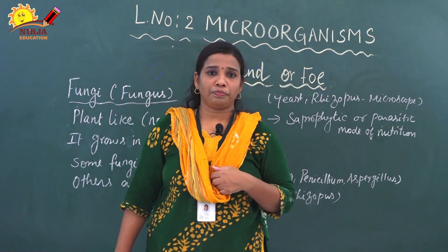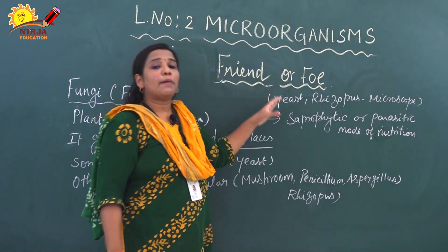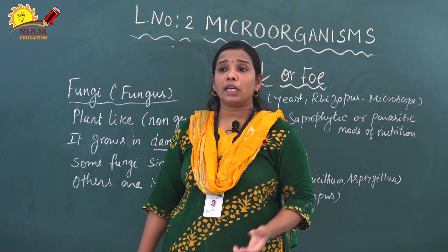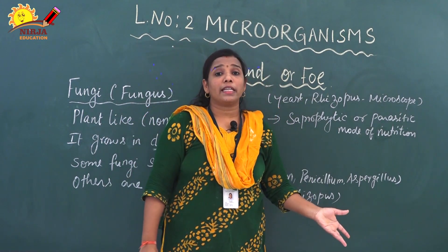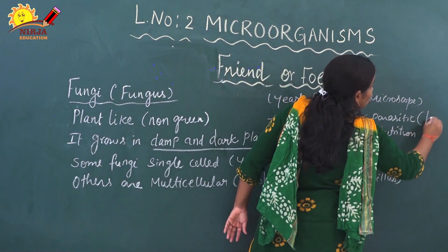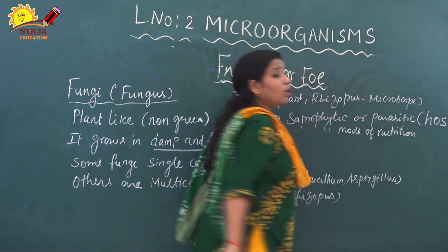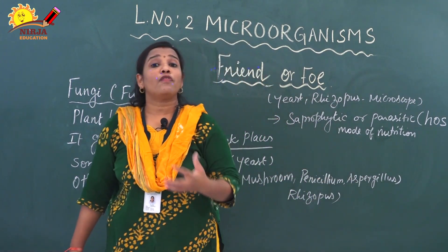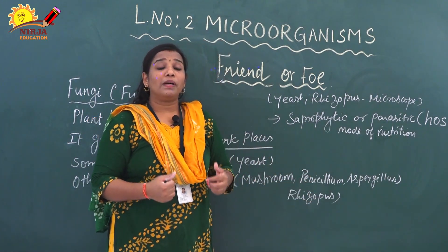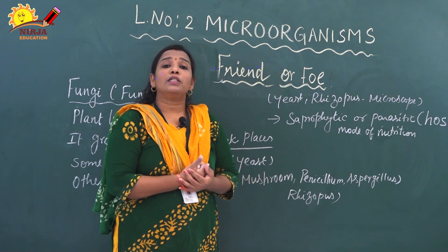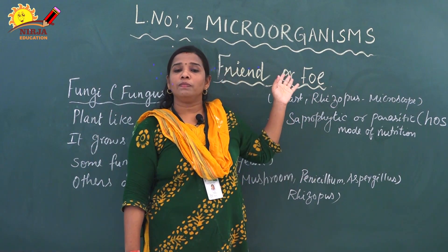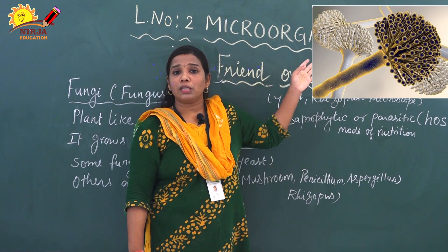Examples of saprophytes are mushroom and mold. The second type is parasitic mode of nutrition, where the fungi take food from other living organisms called the host. Instead of giving benefit, they give a harmful effect to that living organism. Examples are penicillin and aspergillus. You can look at the image — you will see mushroom, aspergillus, and penicillin.